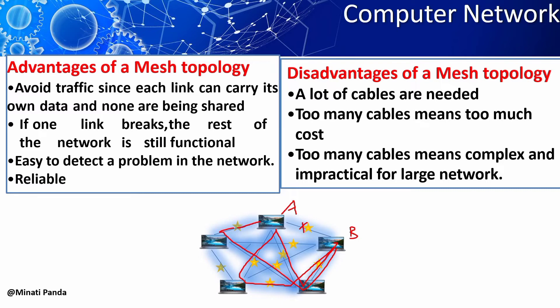Now the disadvantages of mesh topology: a lot of cables are needed, which increases the installation cost. Too many cables makes it complex and impractical for large networks. There is a high risk of redundant connections, and each node requires additional utility cost.